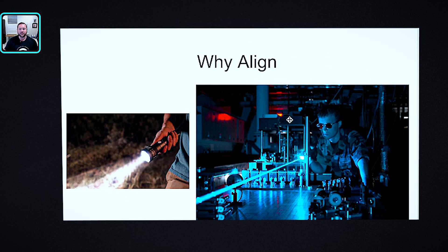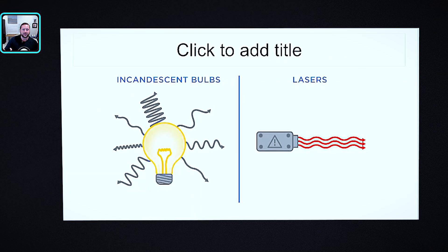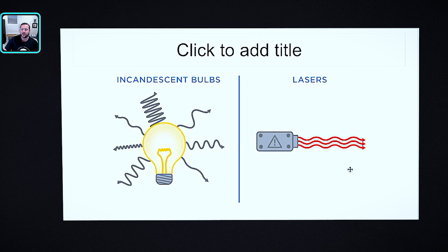First off, we're talking about what is alignment — why do we align, what is this whole thing about? Basically here on the screen you have two different things, two light sources. One is a flashlight lighting up a path, and you've got a guy on the right-hand side with a laser. From physics, a light source like a flashlight or incandescent bulb sends light all over the place in a very unorganized manner, versus a laser where all the light and energy are organized into coherent patterns — the same frequency, the same period.